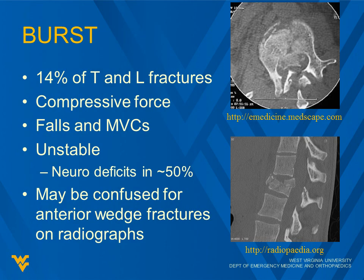Burst fractures are 14% of thoracic and lumbar fractures and can be especially devastating. Again a compressive force — falls and motor vehicle crashes are common mechanisms. These are considered unstable, with neurological deficits in about 50% of cases. They may be confused for anterior wedge fractures on radiographs.